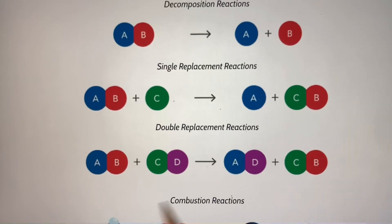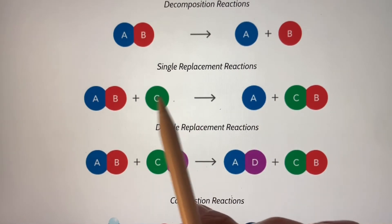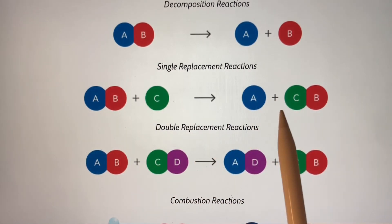A single replacement reaction is when we have a compound or ion that's combined and we have a single entity. What's happening is it's going to replace one of these things. If we look here, A is the one that's being replaced. So C and B are now forming a new molecule or compound. How this occurs is based on the activity series, and we're going to be discussing that.